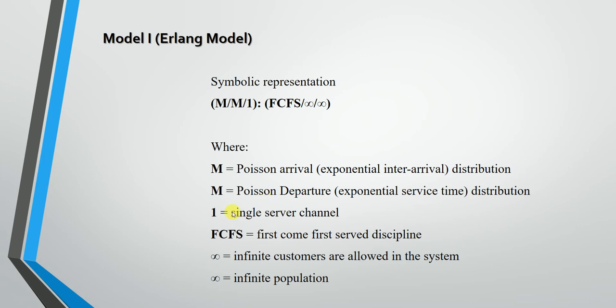The number 1 represents a single server channel in the system. FCFS stands for First Come First Served — that is the service discipline used. The first infinity represents infinite customers allowed in the system, and the second infinity represents infinite calling sources or infinite population in the system.